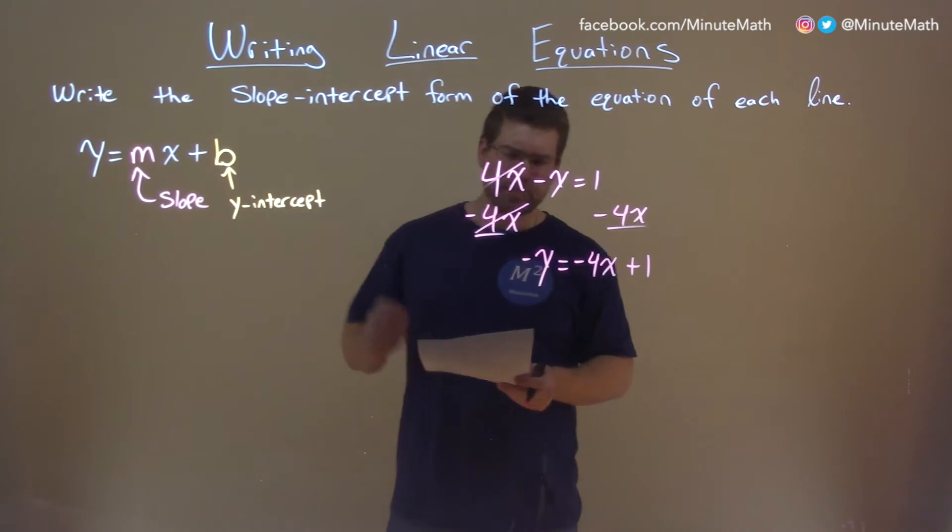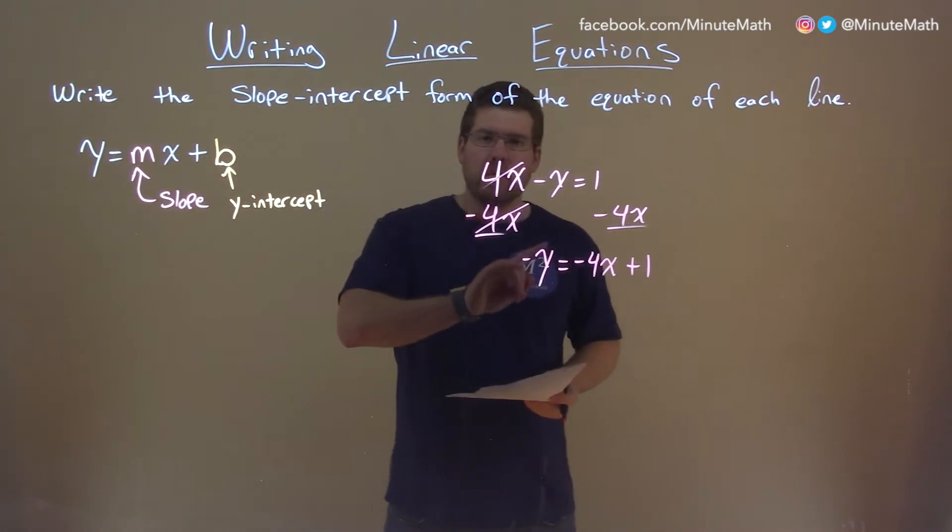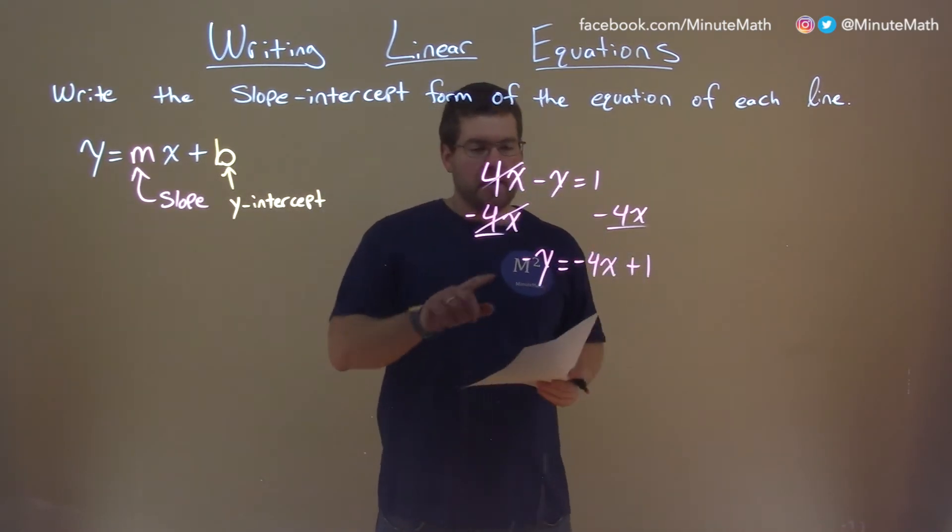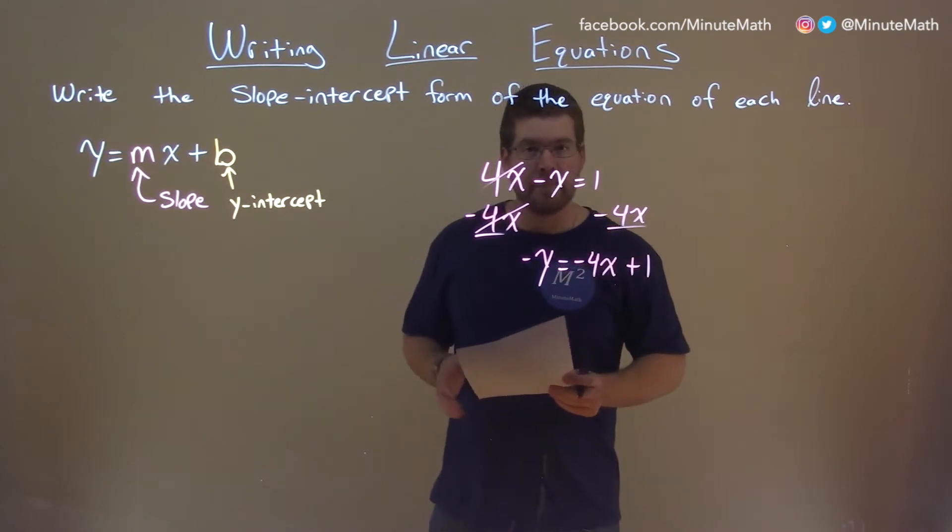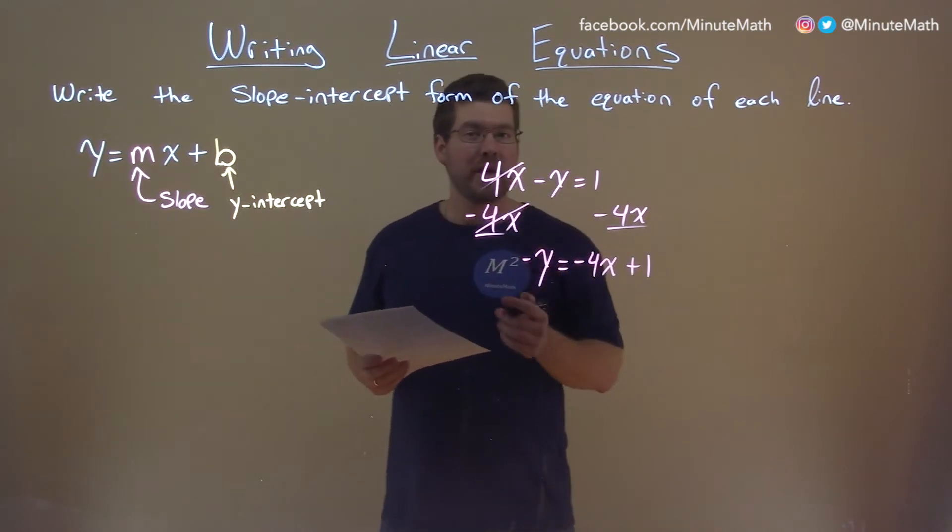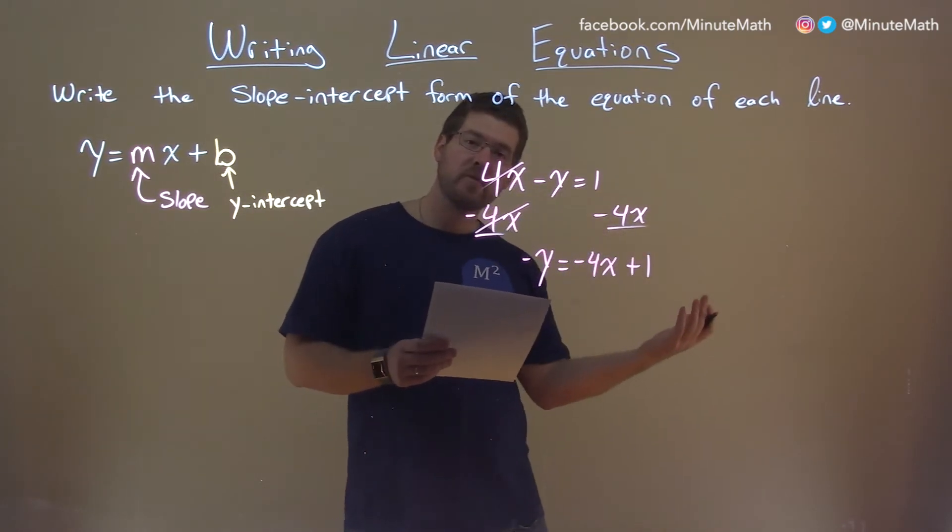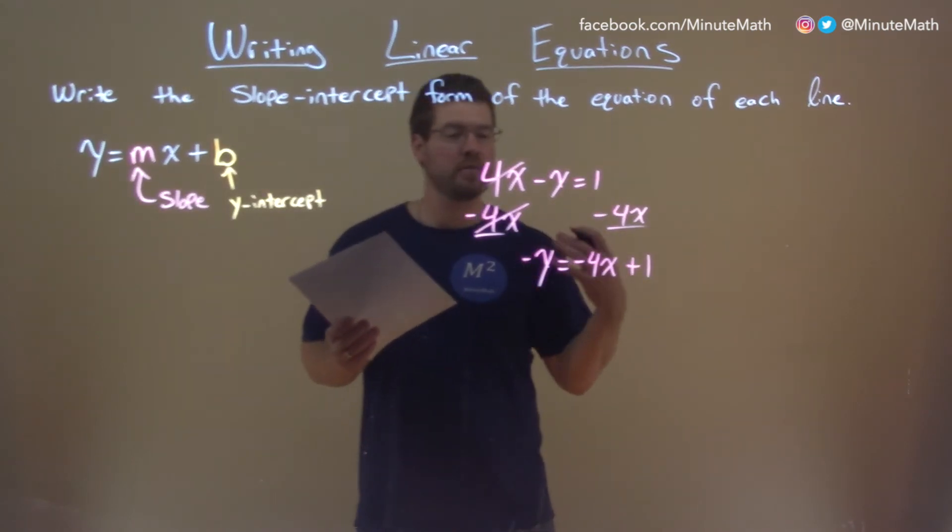Remember, positive 1 there. Be careful, a lot of times people think they're done here, but we still have that minus y. To get rid of the minus y, we can do a few things. We can divide by negative 1, or multiply by negative 1 to both sides.